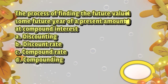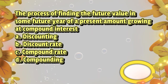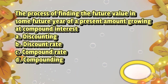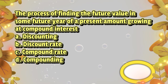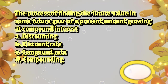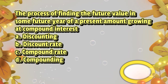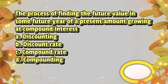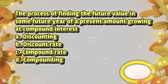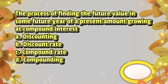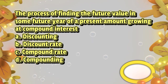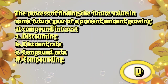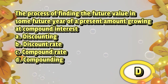The process of finding the future value in some future year of a present amount growing at compound interest. A. Discounting. B. Discount rate. C. Compound rate. D. Compounding. The answer is letter D.